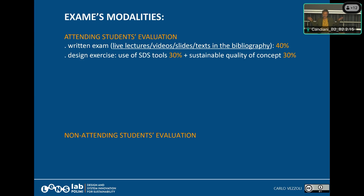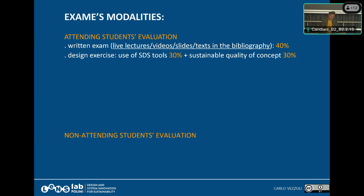So: tools 30%, sustainability quality of concept 30%, written exam 40% — totalling 100%, with the maximum mark being 30 cum laude. It is a weighted average. It's clear, and it's recorded — you can listen to it, and it's written on the course platforms.